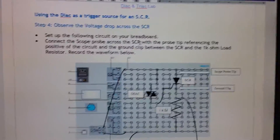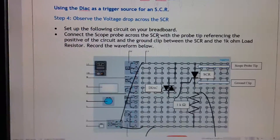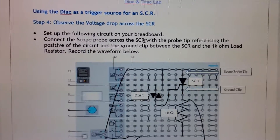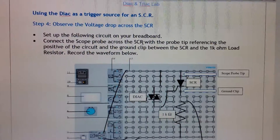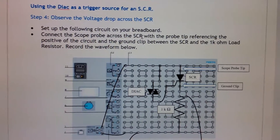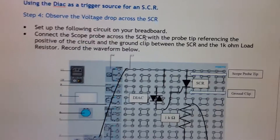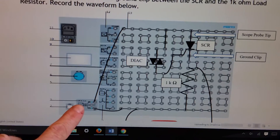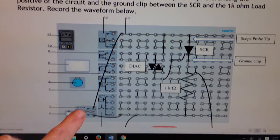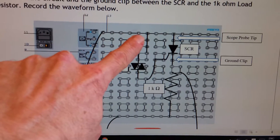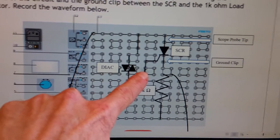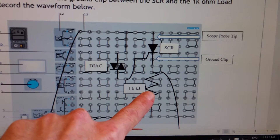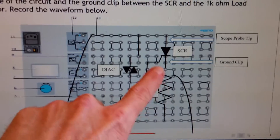Alright guys, second part of the diac and triac lab. The next thing we're going to do is look at the voltage drop across an SCR. We're going to use the diac to trigger the SCR. We've got AC across the entire circuit, the positive going into the diac, the diac is then going to fire on the SCR, and the SCR is going to allow that voltage to go down to the one kilo ohm load.